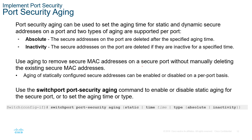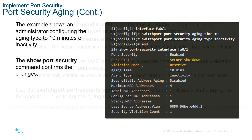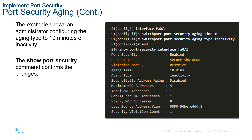How do we set our aging timer? We go to the interface and issue switchport port-security aging, and we can either do static or a time value. With that, we set the time either based off absolute time or the inactivity time. For example, here we have an aging of 10 minutes of inactivity. We set the time, and then we set the type. You can now see the age time and age type being modified — it's now 10 minutes of inactivity.